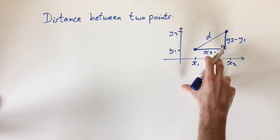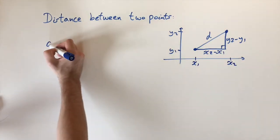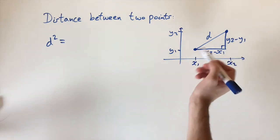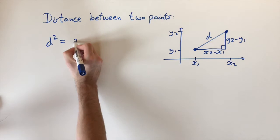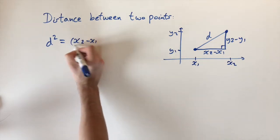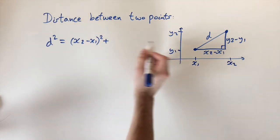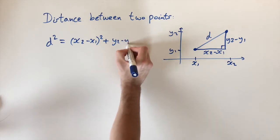And so if we apply Pythagoras' theorem to this triangle, we get that d squared, d being the hypotenuse, equals the other two lengths squared. So x2 minus x1 squared plus y2 minus y1 squared.